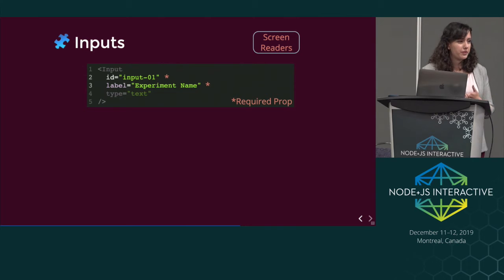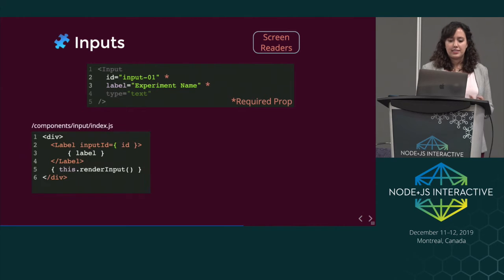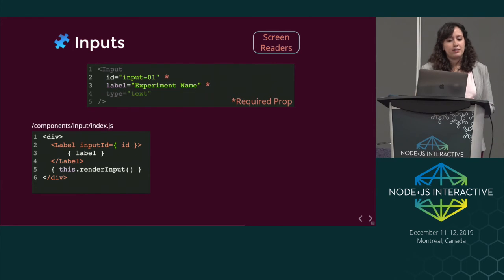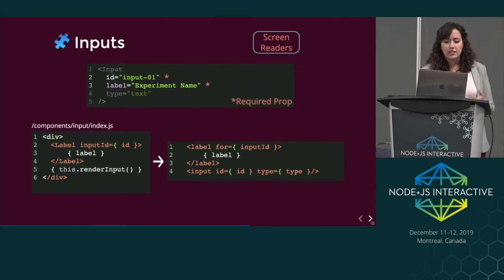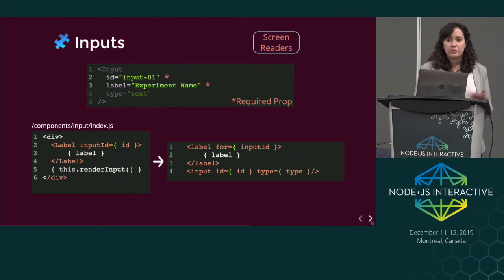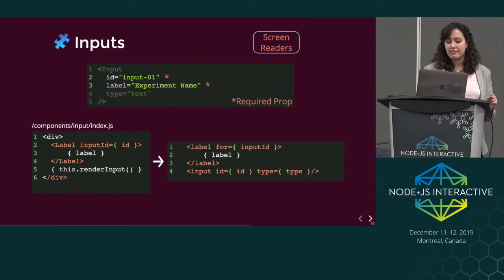A few quick changes for our input component: we now require an ID and we require a label. What this means is that in our code, we no longer have an if statement — we know a label has been passed. We say: use the label component, this is the input's ID, this is the label's text, and render the input. Further down, the label is properly using a 'for' attribute that points to the input's ID, and the input has that same ID. These two matching — the 'for' and the ID attribute having the exact same string (it is case-sensitive) — means the label is now properly associated with the input. If I were using a screen reader, it would say something like 'edit name text.'